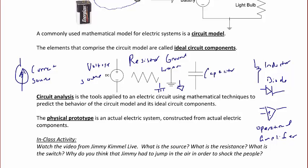Circuit analysis are the tools used to apply to an electric circuit by using mathematical techniques to predict the behavior of the circuit model and its ideal circuit components. The physical prototype is an actual electric system constructed from actual electric components, such as the battery, the light switch, and the bulb that I showed in the prior image. Now we're going to take a break from the lecture and watch a video. Some things to think about as we're viewing the video is, what is the source? What is the resistance? What is the switch? And why do you think that Jimmy Kimmel in the video had to jump in the air in order to shock people, thinking about the flow of electricity and current?